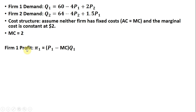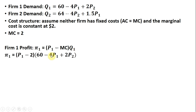Let's start with firm one. Firm one's profit, pi one, can be expressed as basically the profit per unit — price minus marginal cost — multiplied by the number of units. Marginal cost is 2, and Q subscript one is given by firm one's demand equation, so I'm going to plug that in.